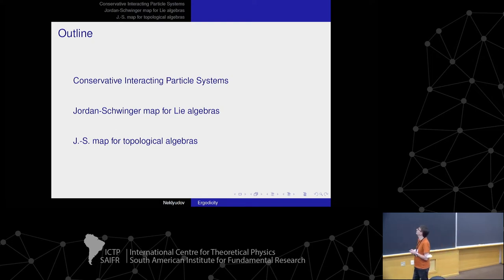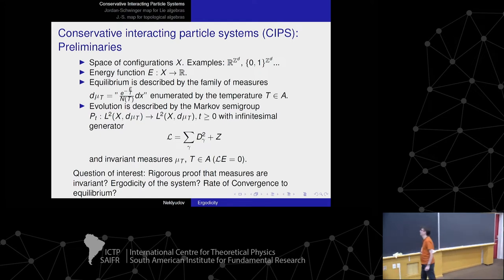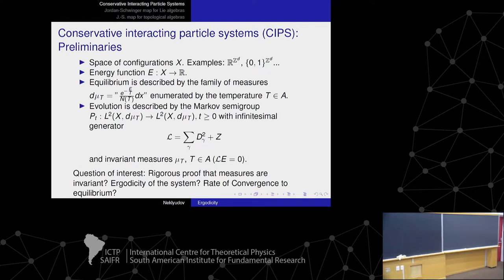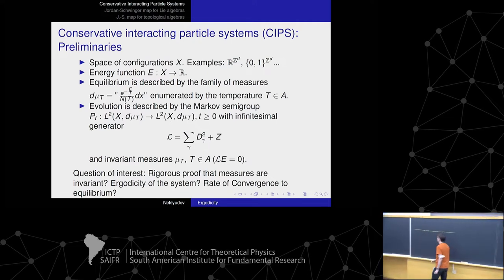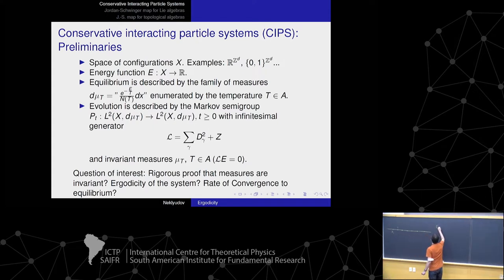Let us start with a brief introduction to the theory of interacting particle systems. We have a space of configuration, which is usually R to the power Z^d. In our case we have a lattice — a one-dimensional lattice for simplicity. We have a set of atoms in the lattice, each atom characterized by its momentum. We denote E the number of the atom. Then we have an energy function; in our example, the energy of atom E will be x_E squared.